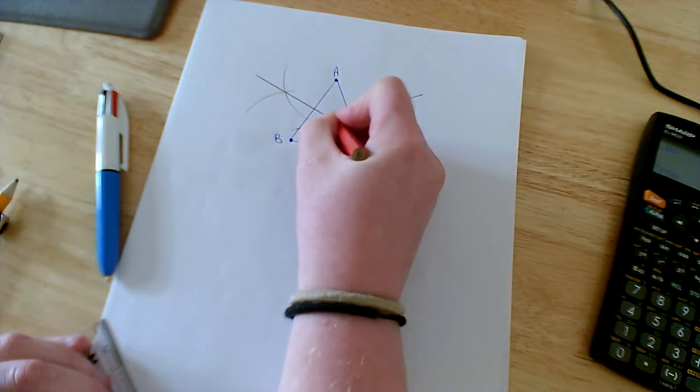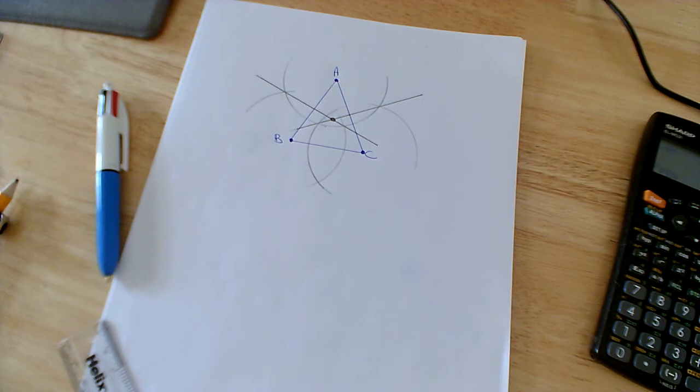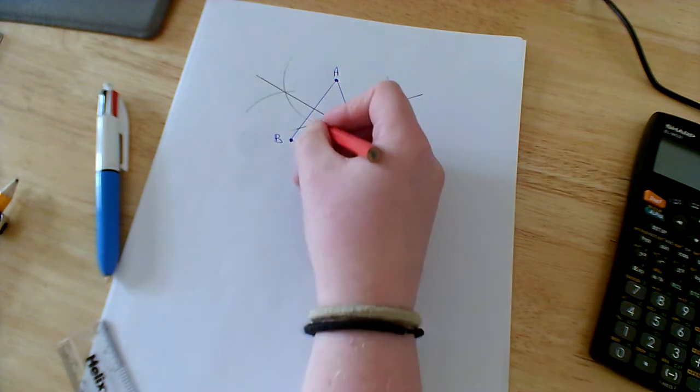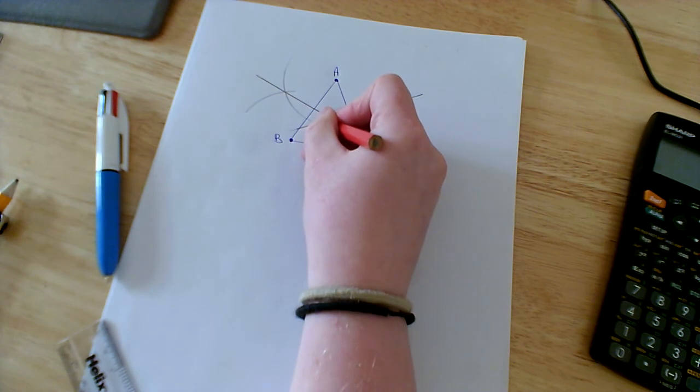This here is where they're after both intersecting. And where they're after both intersecting we call this K. So this is actually my circumcentre.